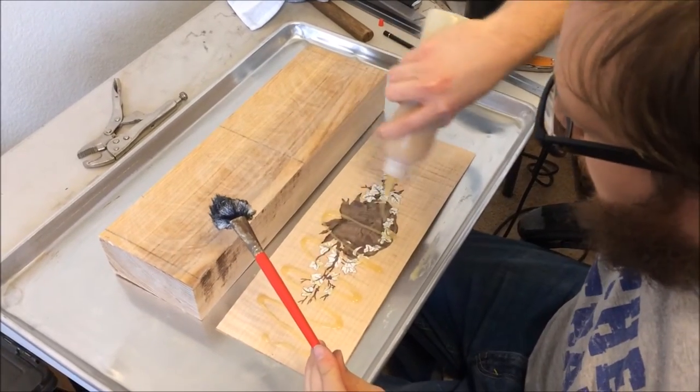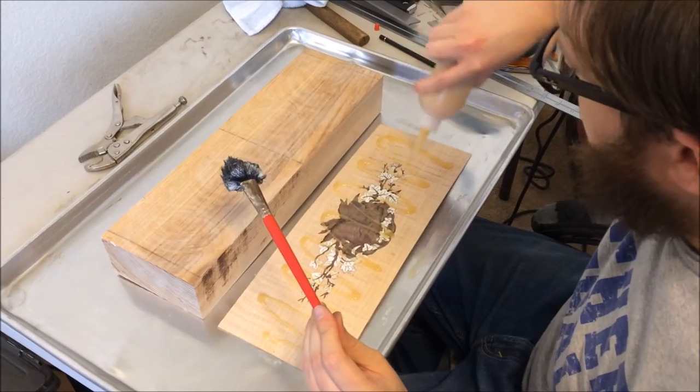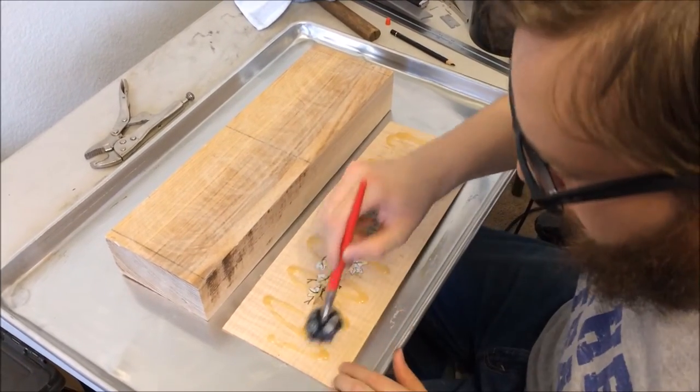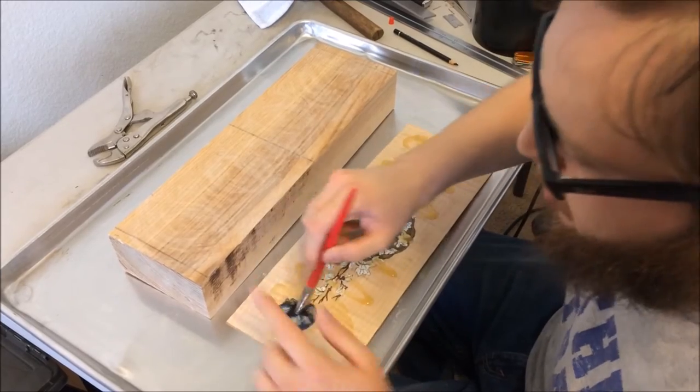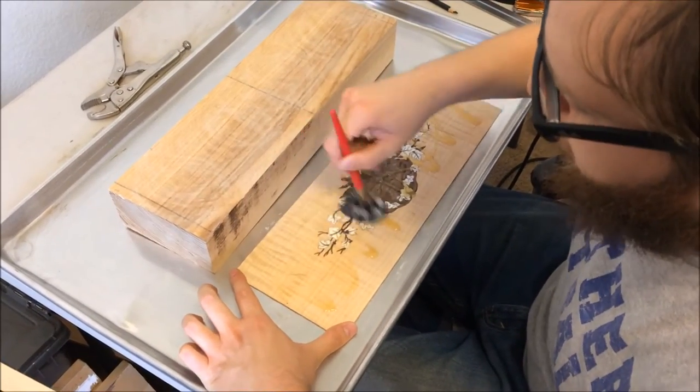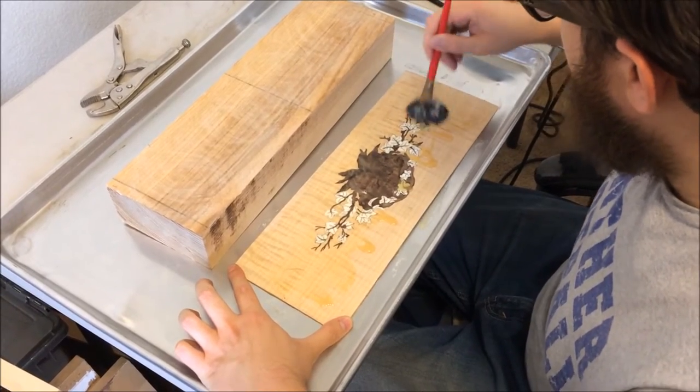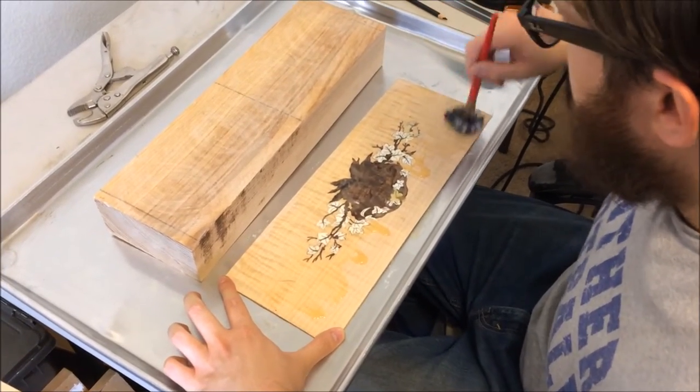Now glue goes on the marquetry panel. The toothed surface takes a lot more glue because there's more surface area, whereas this sanded surface of the marquetry panel doesn't take nearly as much.